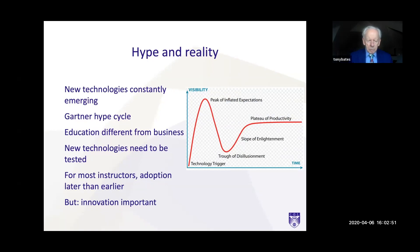But new technologies are constantly emerging. This is the Gartner hype cycle, which I find very useful, because many new technologies and their application in education fit this pattern very much. There's an initial peak of inflated expectations, then a trough of disillusionment when people start finding out what the limitations are. Then people begin to learn what the unique affordance of the technology is in their particular context, and then it reaches a plateau of productivity.